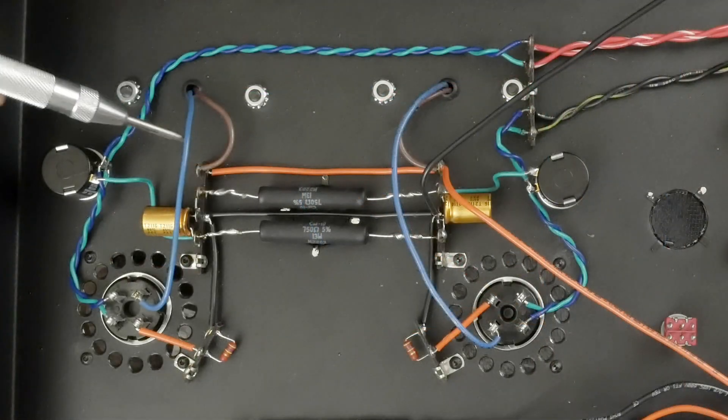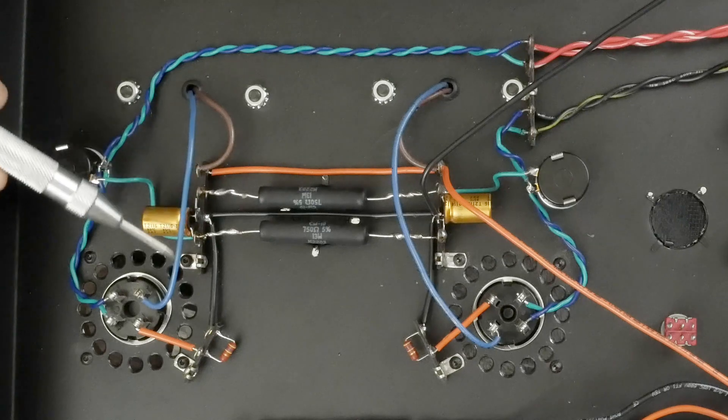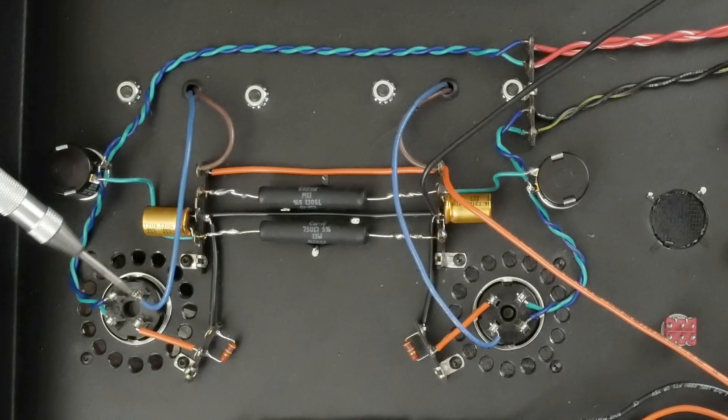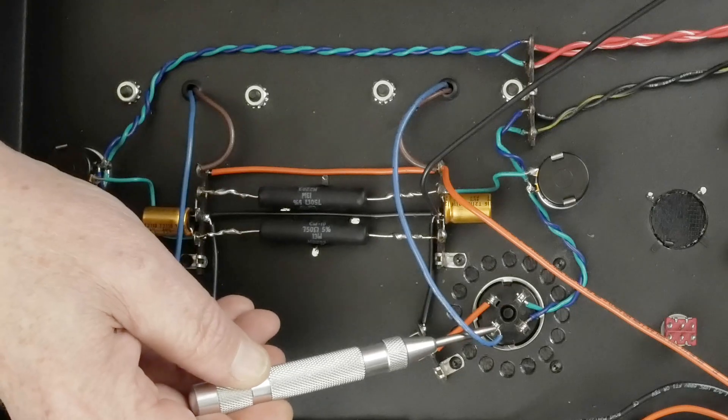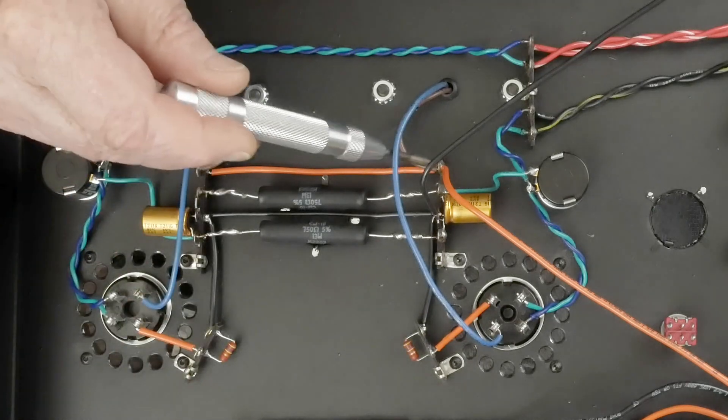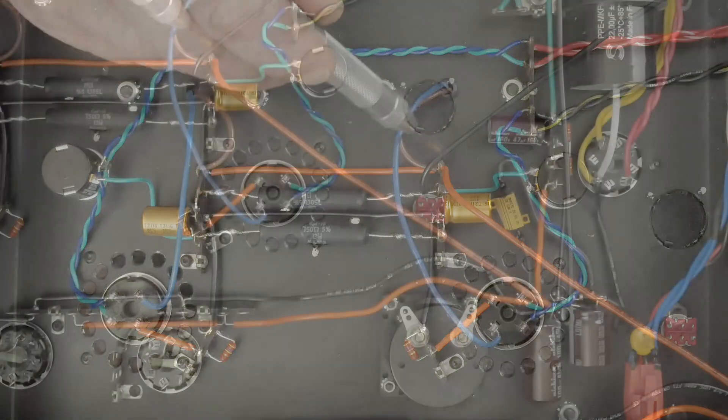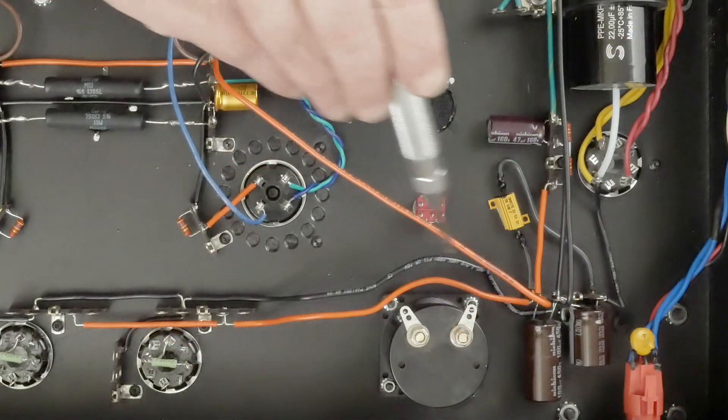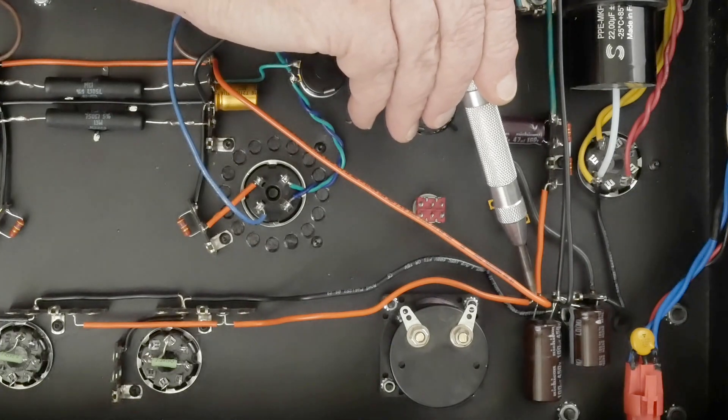This is the wire from the output transformer that goes to the plate of the output tube. This blue wire connects here, and on this tube over here it connects there. Like I said in the last video, these are B+. So we got this orange wire that runs over here to our B+ output wire.